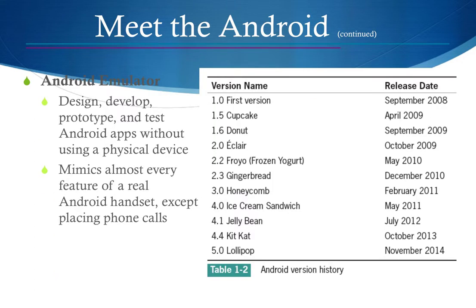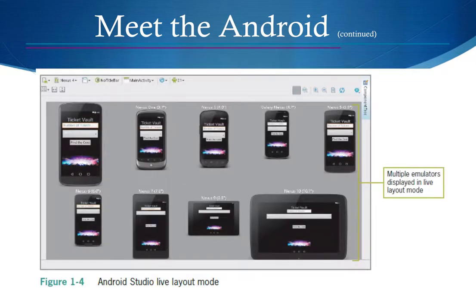The Android emulator lets you design, develop, prototype, and test Android apps without a physical device. There have been many Android OS versions released over time. The most recent shown here is Lollipop 5.0, though Marshmallow 6.0 also came out recently. A potential exam question: when was the first version released and what is the most recent one?